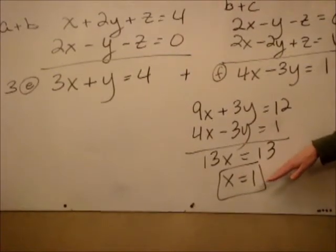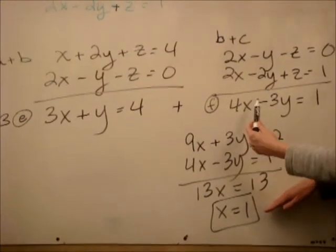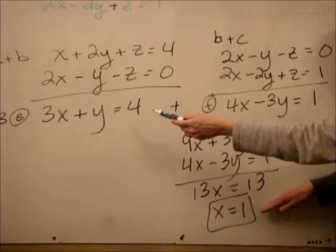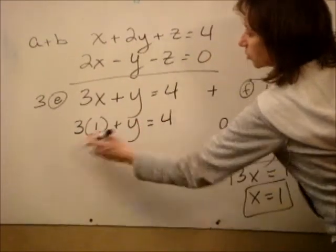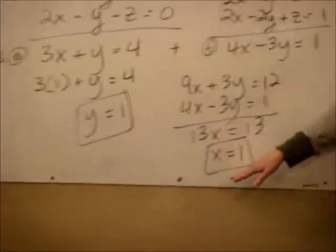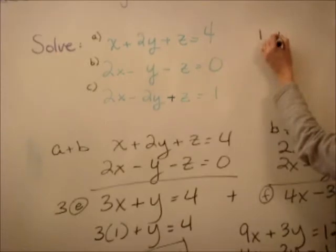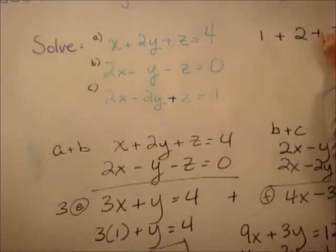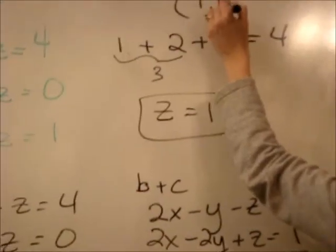Once you get that, we're going to do some back substitution. We're going to put x back into equation e to get y. So we get 3 times 1 plus y equals 4. Subtract 3 from both sides and we get y equals 1. Now we have x equals 1, y equals 1, and we go back up to find z. Where we see x and y, we put in 1, so we get 1 plus 2 plus z equals 4, and we get z equals 1. Our ordered triplet is 1, 1, 1.